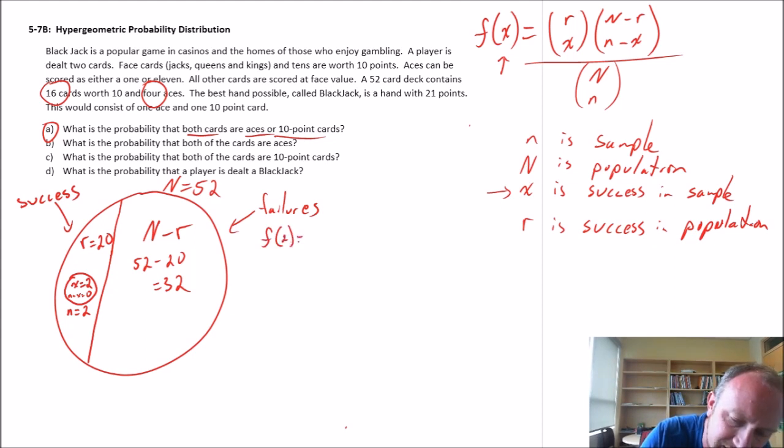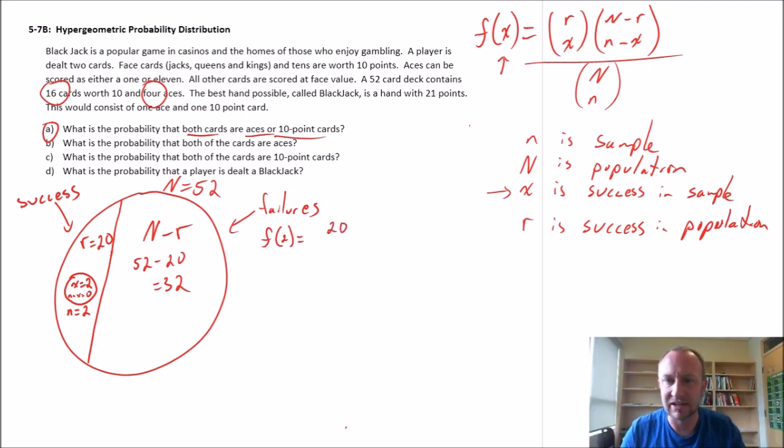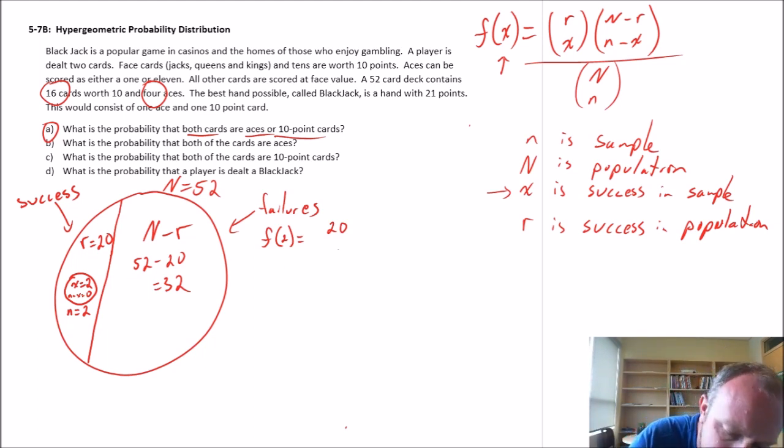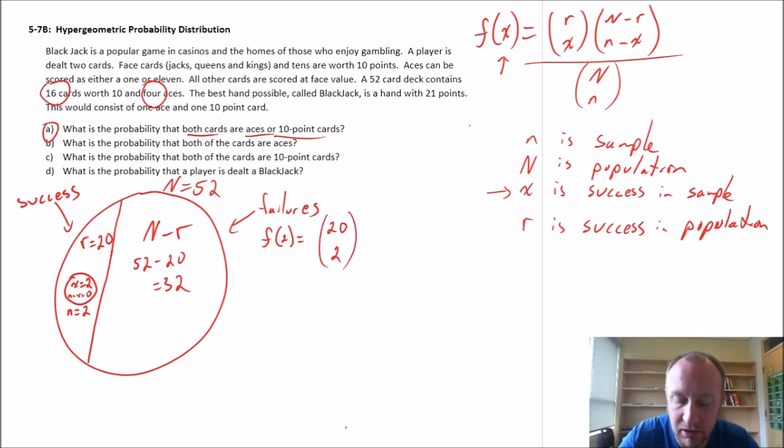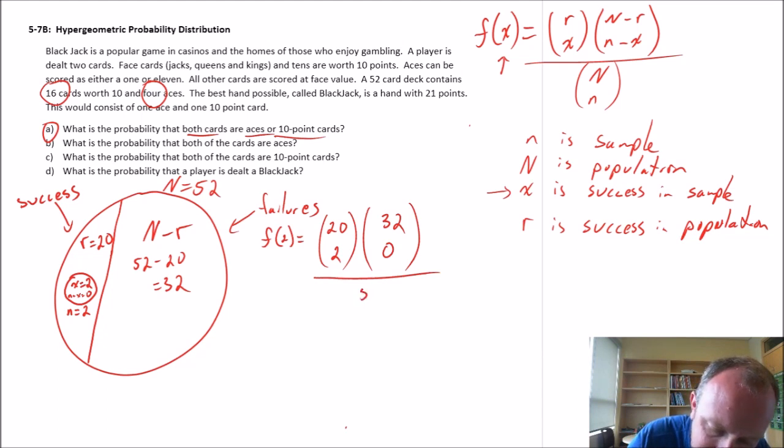So let's get into our calculations here. The probability of two successes, I have R is equal to 20. So within the population, there exists 20 cards that qualify as a success. In my sample, I want two of those cards or both of those cards to be a success. N minus R, the number of failures, 32. The number of failures in my sample, I want no failures in my sample, divided by my population size 52 and sample size 2.